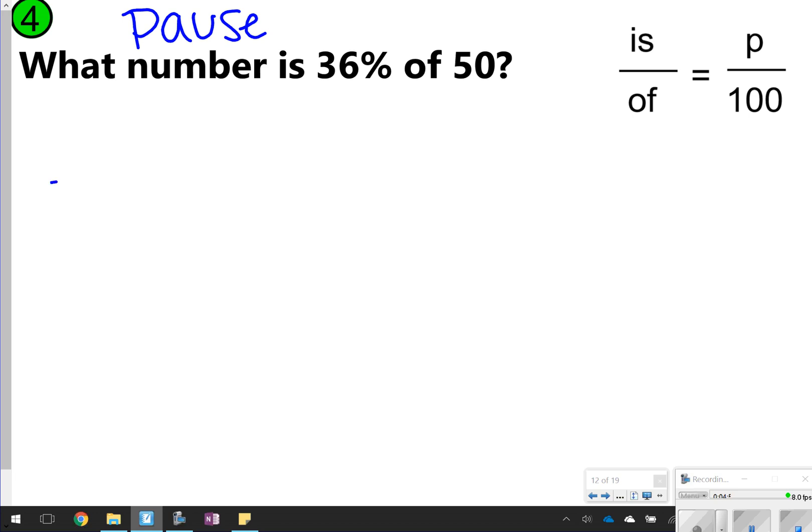All right, here we go. So what number is 36% of 50? I know 36 will go over 100 because it's the percent. 50, it says 'of 50', so that means out of 50. Out of 50, so that means 50 will be the whole, which means I don't know the part.